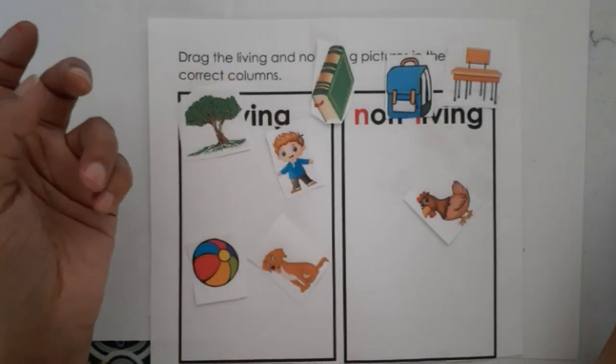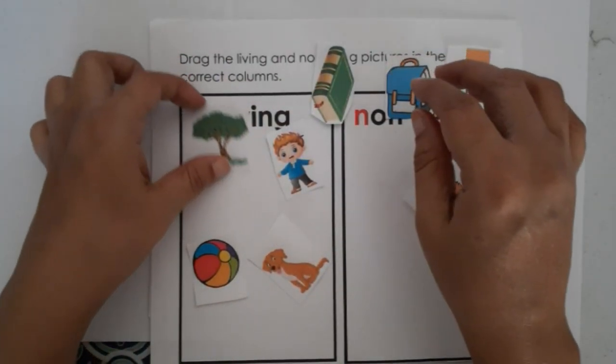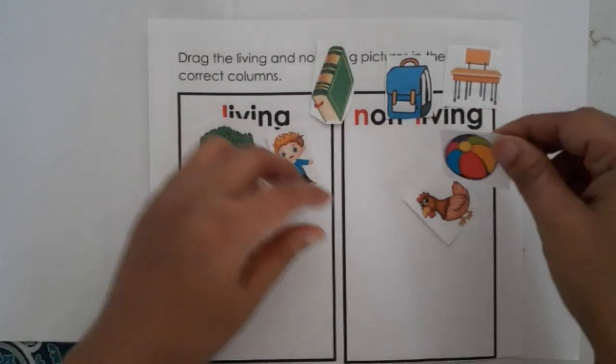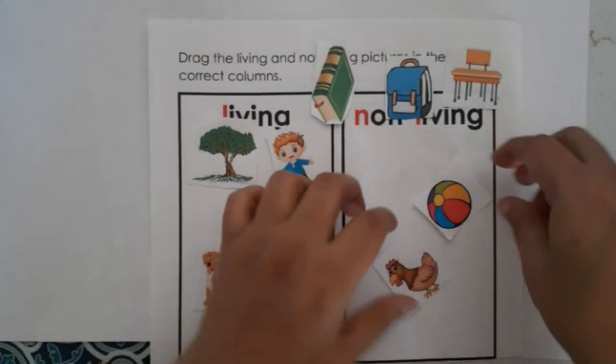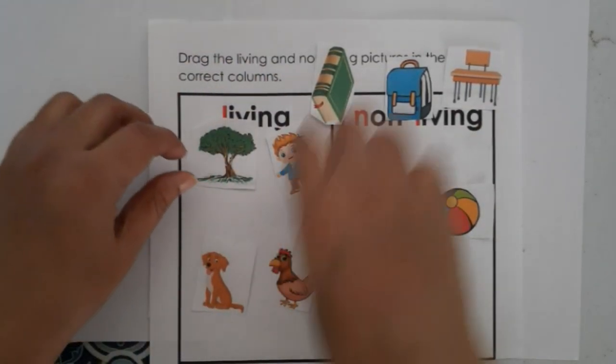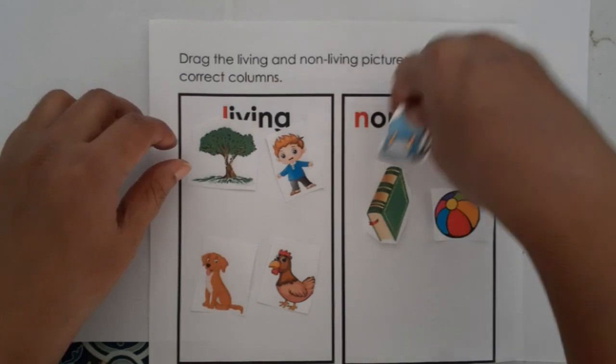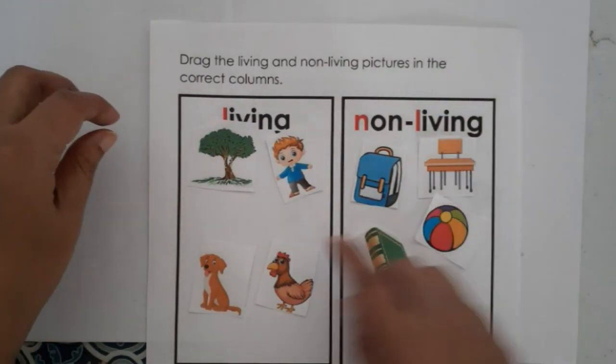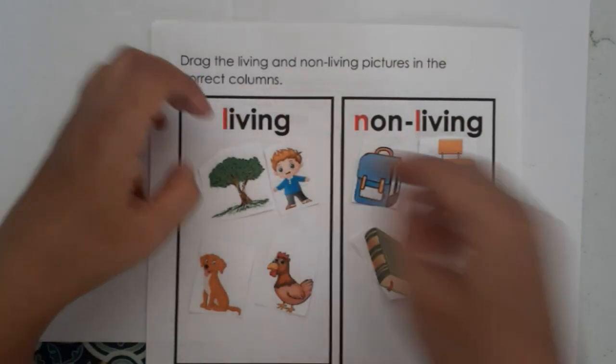Living things can move from one place to another place. Non-living things cannot move on their own. For example, animals can move, but a book or bag cannot move by itself. This is the main difference between living and non-living things.